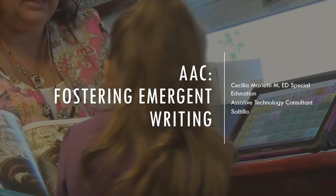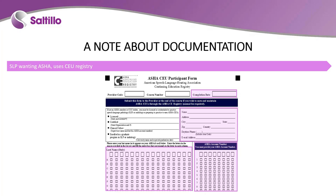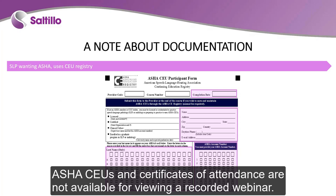Good afternoon. My name is Cecilia Marietti and welcome to AAC Fostering Emergent Writing. Thank you so much for joining me today. It is one o'clock so we're going to begin. Before we get started, I do want to make a note about documentation. There is an ASHA bubble sheet that is required if you use the registry. Please make sure to include today's date. You should see your .1 credits on the ASHA website within six to eight weeks. For those who are not interested in ASHA CEU, a certificate will be sent to all attendees at the end of the session.